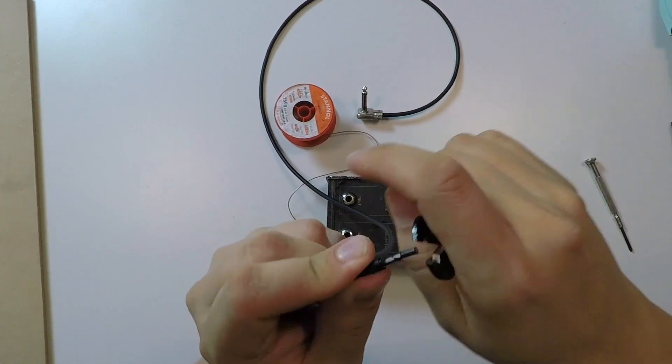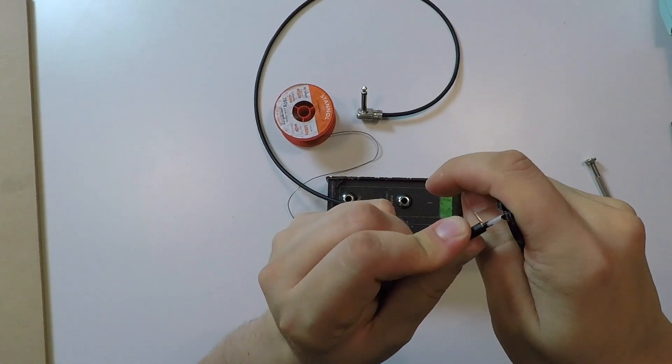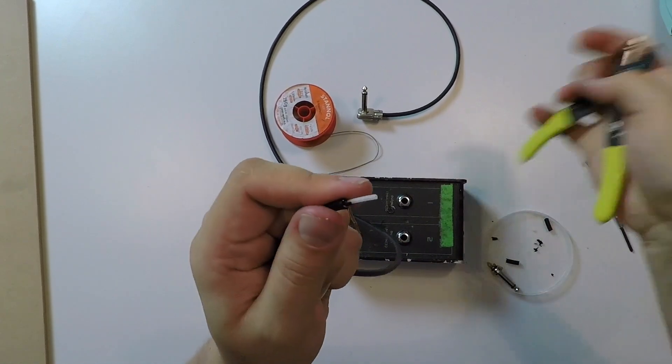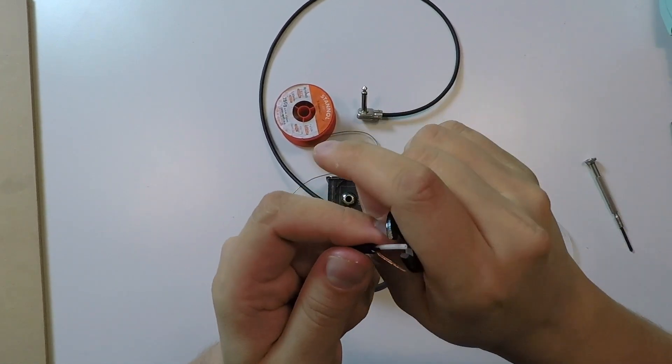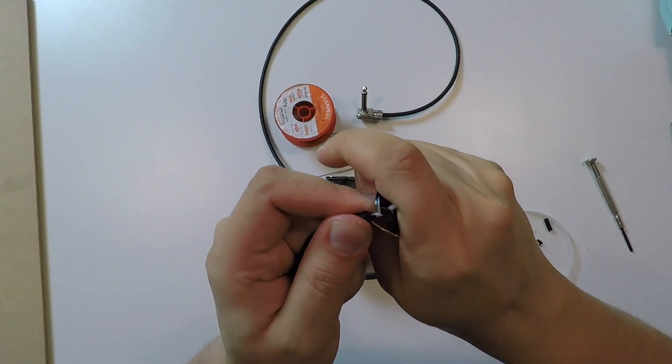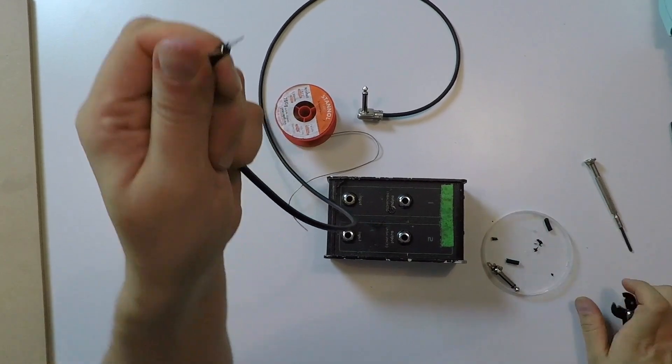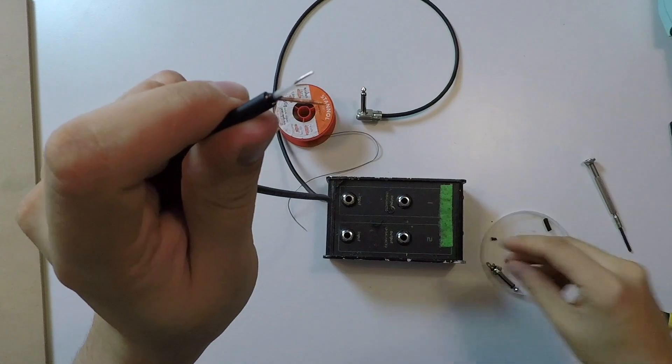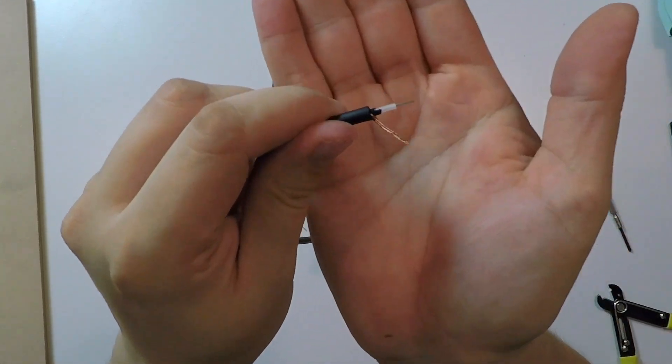And then strip off the black film here and here. So this is the cable prepped.